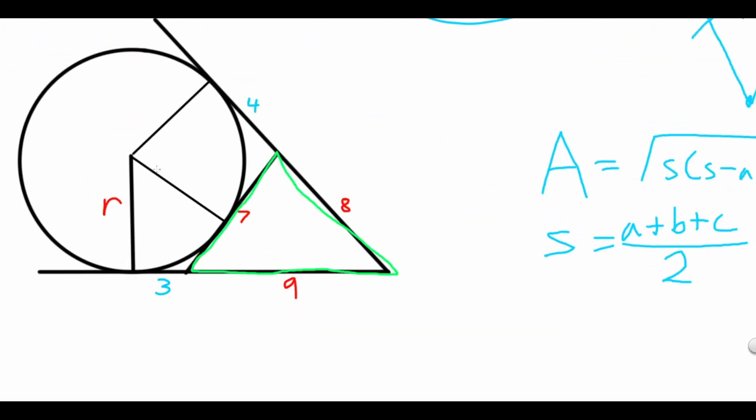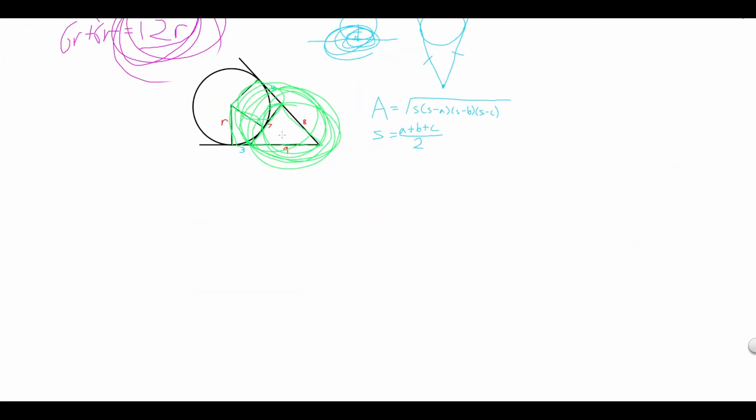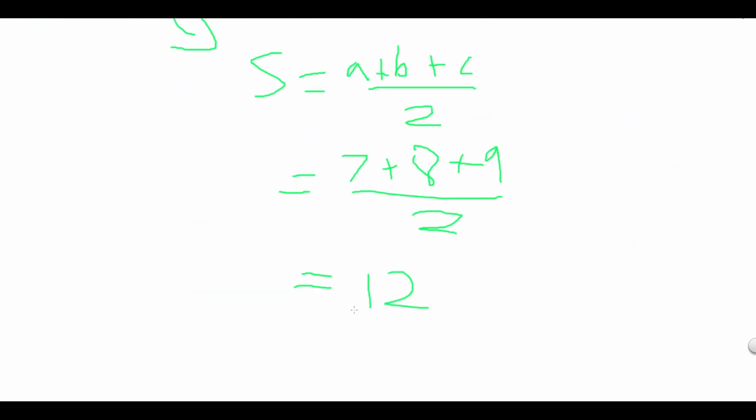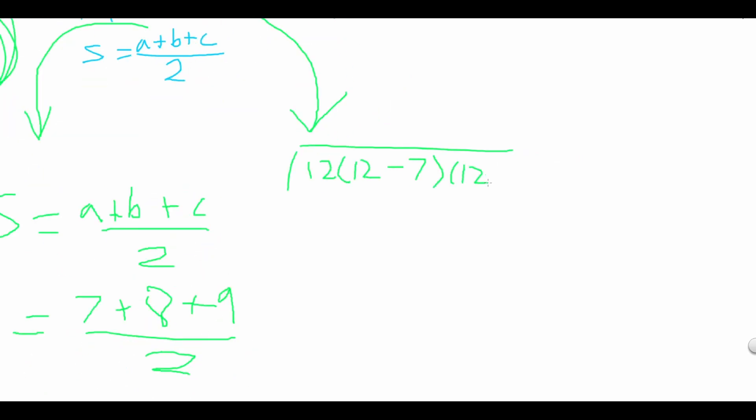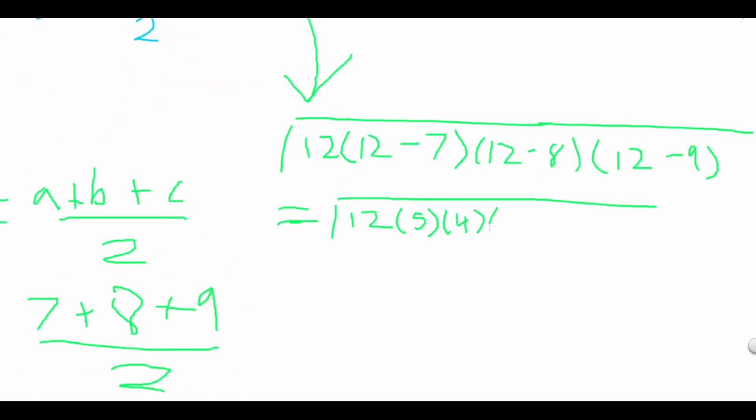Next, let's move to the more broken down shapes. Using Heron's formula, we can calculate that the semi-perimeter is 12. Plugging this value into our formula, we get that the area of this triangle is equal to root 720.